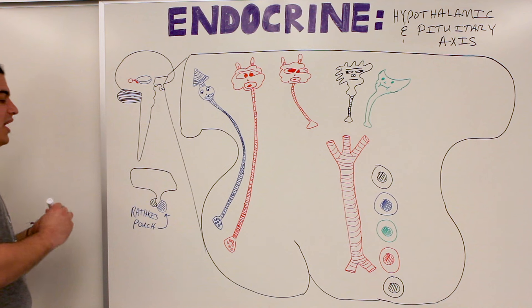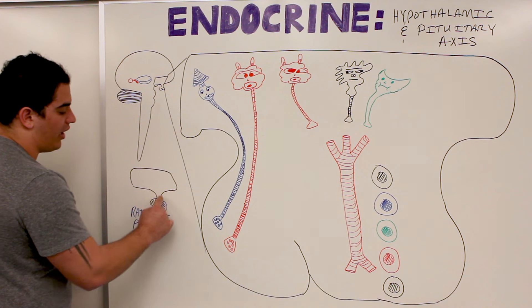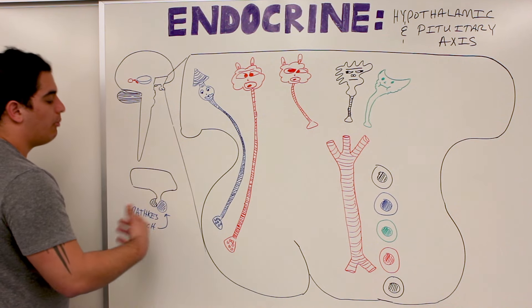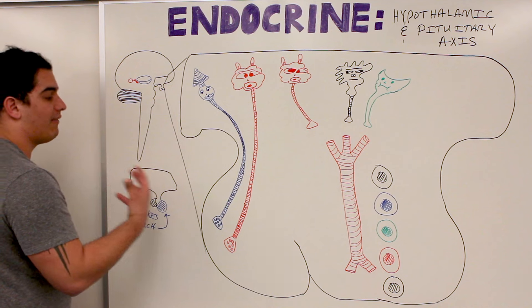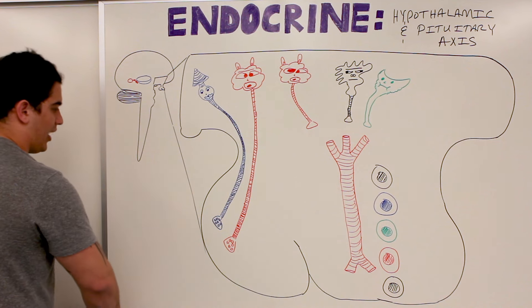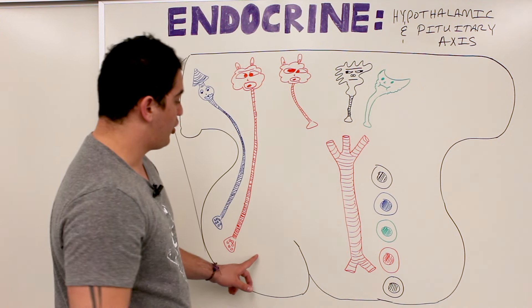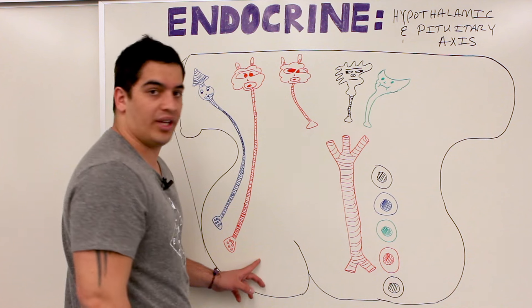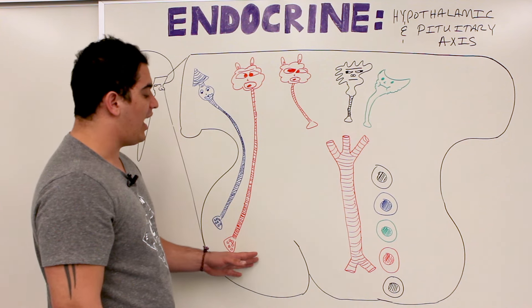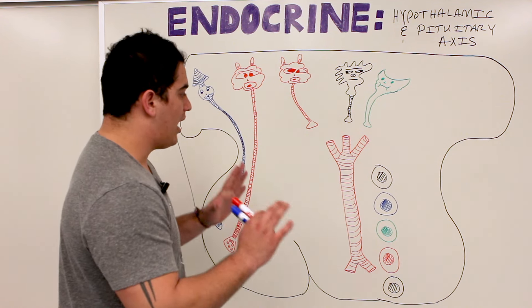The anterior pituitary is derived from a specific pouch called Rathke's pouch — it buds off from the pharynx and combines with the posterior pituitary to collectively form the pituitary gland, also called the hypophysis. The anterior pituitary is glandular cuboidal epithelial tissue derived from the pharynx via Rathke's pouch, whereas the posterior pituitary is neural tissue made up of pituitocytes. It's not really considered a separate endocrine gland — it's actually a part of the brain.